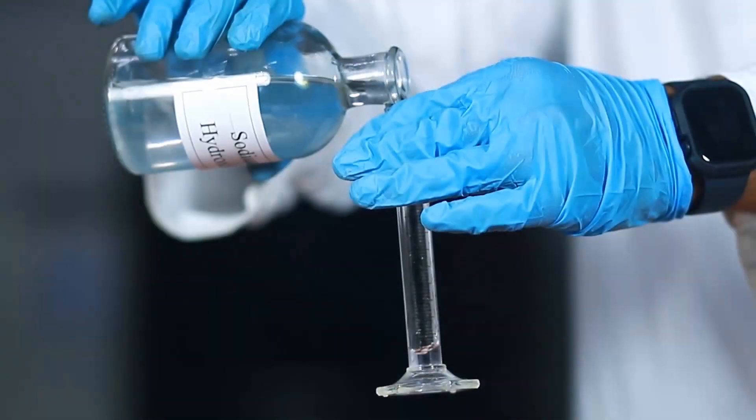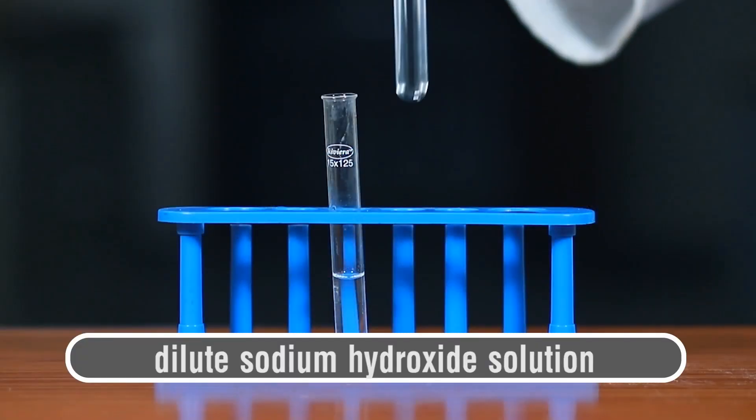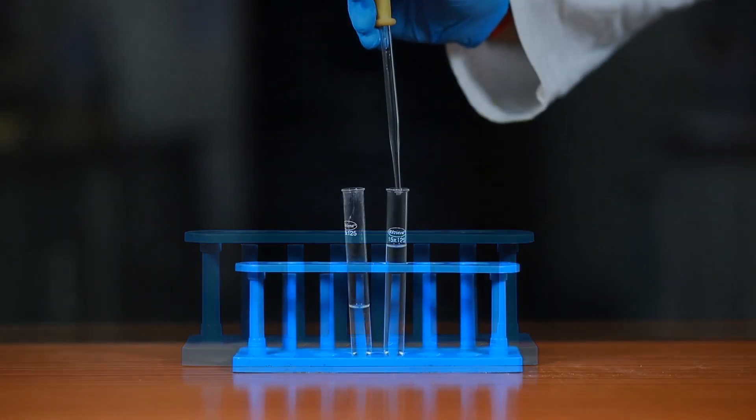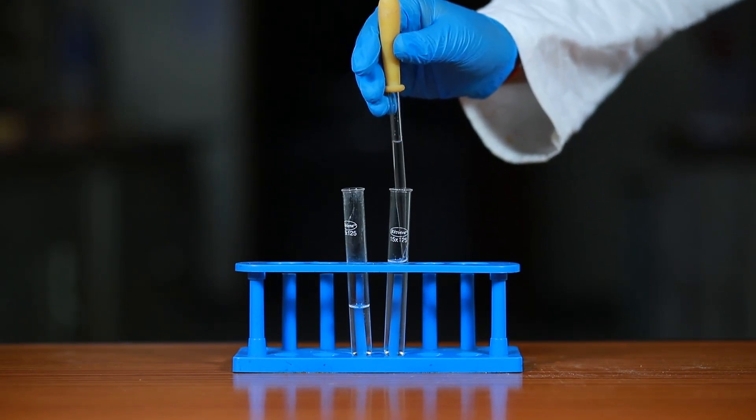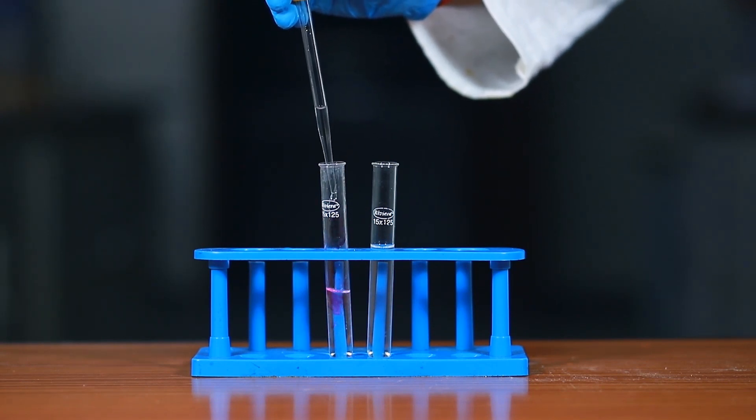Now, take about 10 ml of dilute sodium hydroxide solution in another test tube. Take out sodium hydroxide solution with the help of a dropper and start adding the solution drop-wise into the test tube containing hydrochloric acid till a change in color is observed.